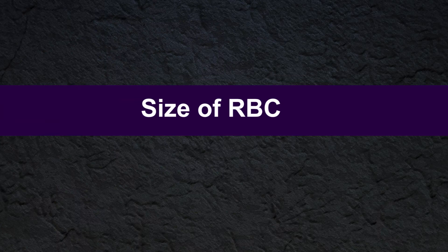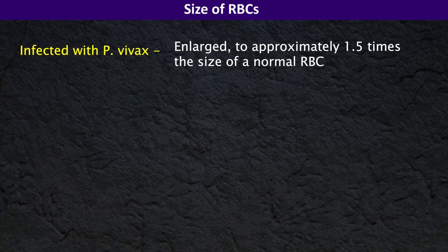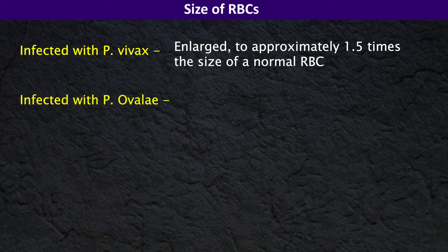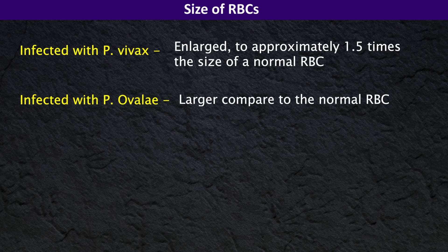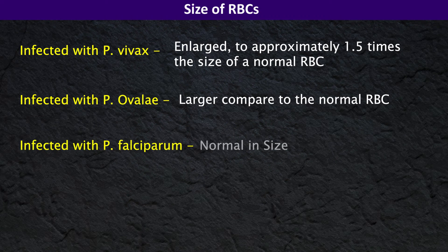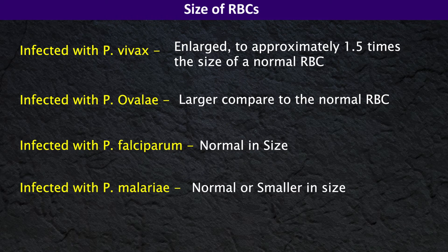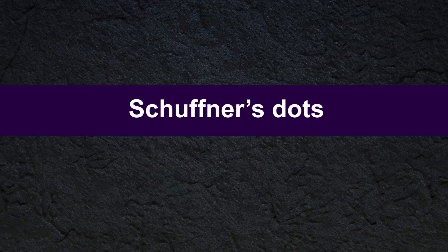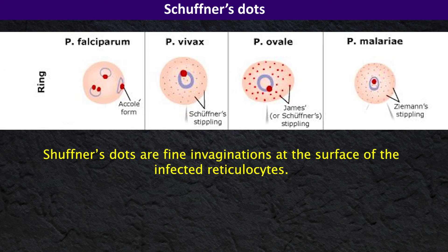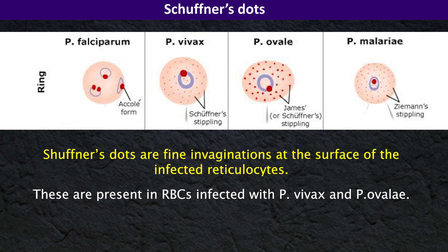Red blood cells infected with Plasmodium vivax are enlarged to approximately 1.5 times the size of normal red blood cells. Red blood cells infected with Plasmodium ovale are also larger compared to normal red blood cells. Red blood cells infected with Plasmodium falciparum are normal in size, and red blood cells infected with Plasmodium malariae are normal or smaller in size. Schüffner's dots are fine invaginations at the surface of the infected reticulocyte, and these are present in red blood cells infected with Plasmodium vivax and Plasmodium ovale.